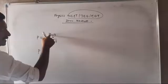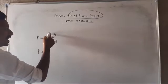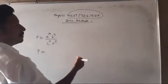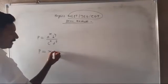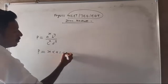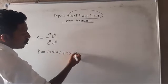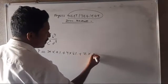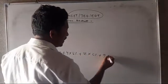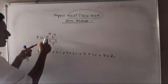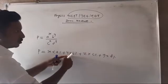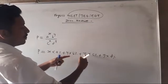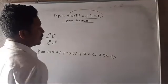How do we find the percentage error in P? The power comes around — meaning the percentage error in P equals X into percentage of A, plus Y into percentage of B, plus Z into percentage of C, plus G into percentage of D.